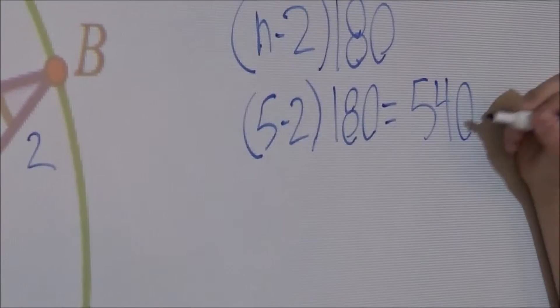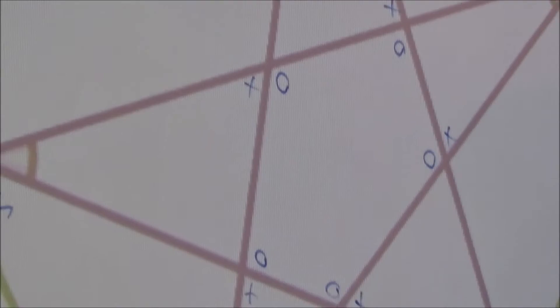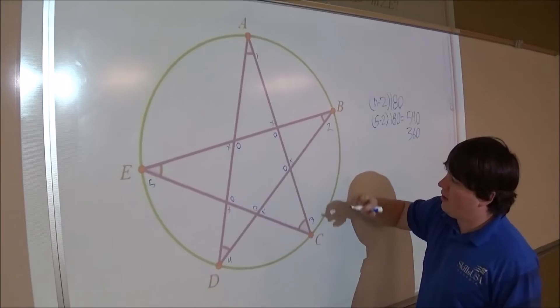I also know that the sum of all exterior angles, which is what these are, of a polygon equal 360. So the sum of all five of those are 360.